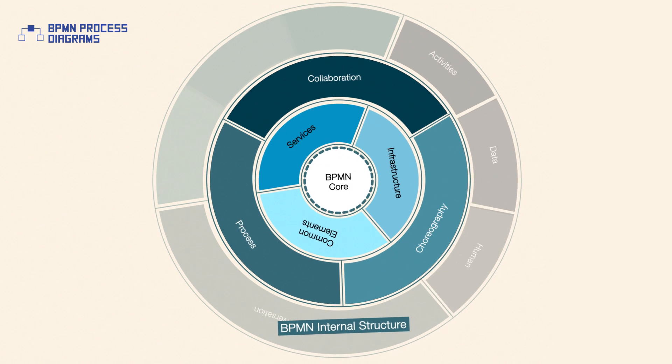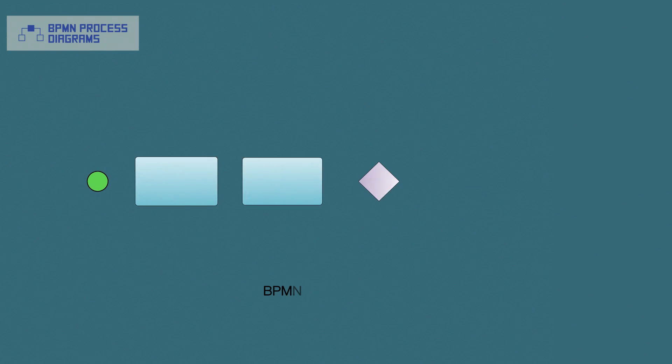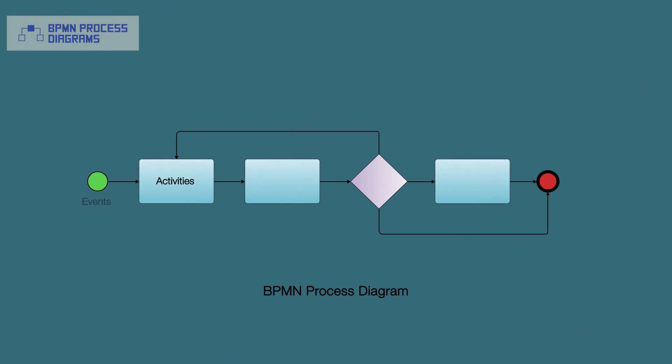Process diagrams are most common and are depicted as a graph of flow elements: activities, events, gateways, and sequence flows that define finite execution semantics.